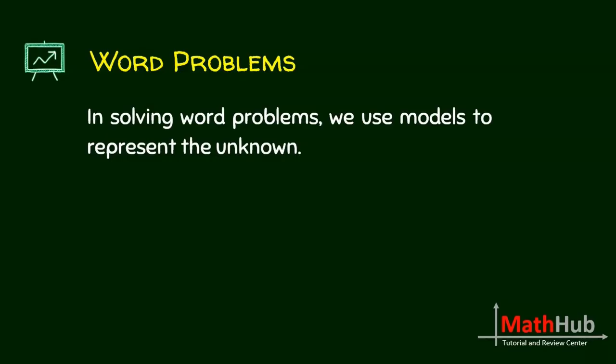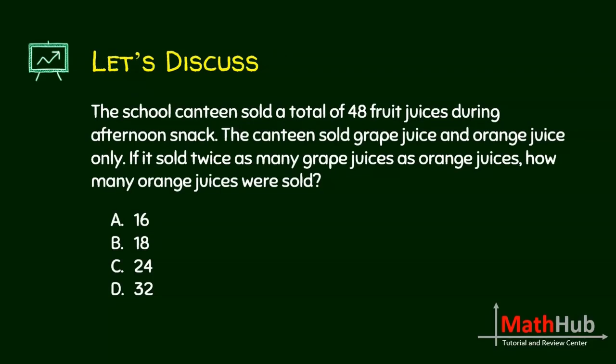We now look at strategies in solving word problems. We use models to represent the unknown. For example: the school canteen sold a total of 48 fruit juices during afternoon snack. The canteen sold grape juice and orange juice only. If it sold twice as many grape juices as orange juices, how many orange juices were sold? Let us look at this part: it sold twice as many grape juices as orange juices.